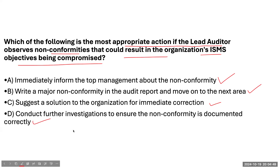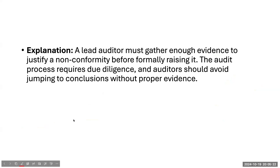You should choose your own answer first. From my understanding, the correct answer is to conduct further investigation — to dig into more details to understand whether the non-conformity is actually correctly documented. Sometimes there are errors and we are not too sure, so we need confirmation. A lead auditor must gather enough evidence to justify a non-conformity before formally raising it. The audit process requires due diligence; auditors should avoid jumping to conclusions without proper evidence.